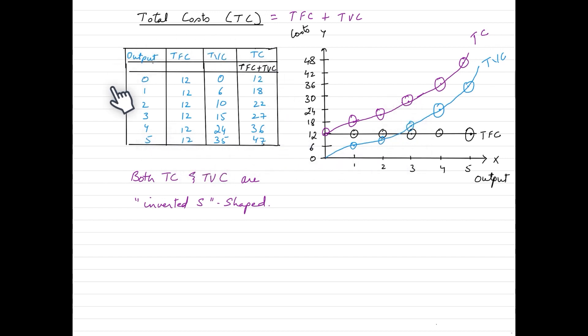We can quickly take a look at this schedule. We have output, we have total fixed costs, variable costs and total costs. We have output going up from 0 to 5. Fixed cost, as I said, does not change with the level of output. Even if you are producing maximum output, which is 5 units in this case, it is 12. If you are producing nothing, it is still 12.